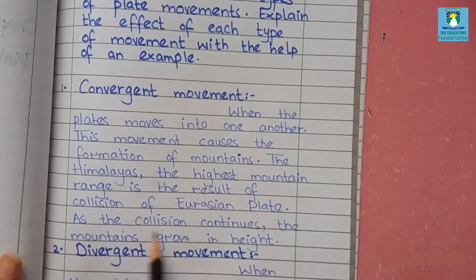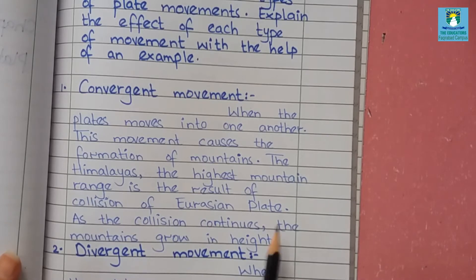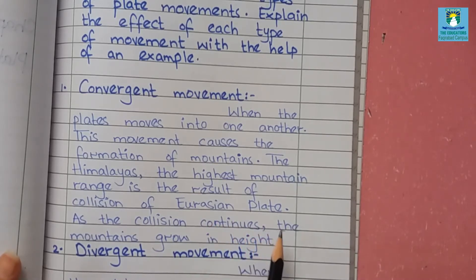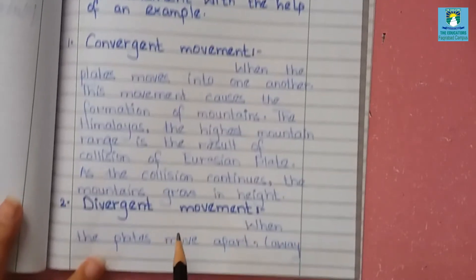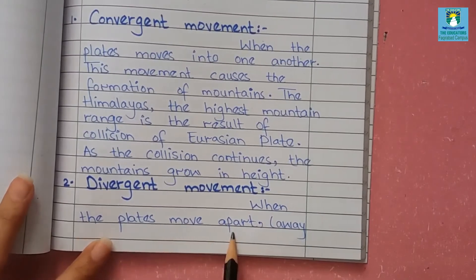As the collision continues, the mountains grow in height. When different types of plates collide with each other, they result in the formation of mountains, and as the plates collide continuously the mountains continue to grow in height. The second type is divergent movement — when the plates move apart, away from each other.